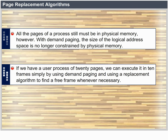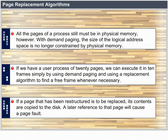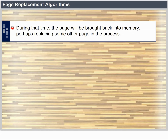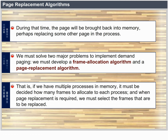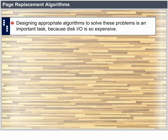If we have a user process of 20 pages, we can execute it in 10 frames simply by using demand paging and a replacement algorithm to find a free frame whenever necessary. If a page that has been modified is to be replaced, its contents are copied to disk. A later reference to that page will cause a page fault, at which time the page will be brought back into memory. We must solve two major problems: develop a frame allocation algorithm and a page replacement algorithm. Designing appropriate algorithms is an important task because disk I/O is so expensive.